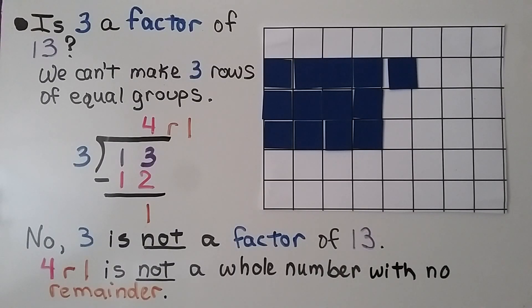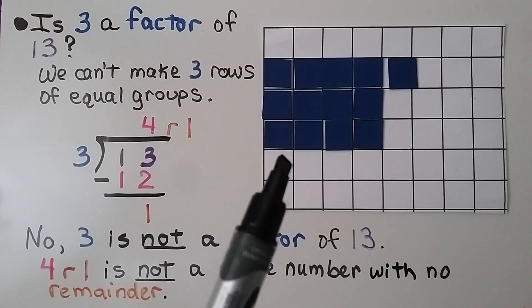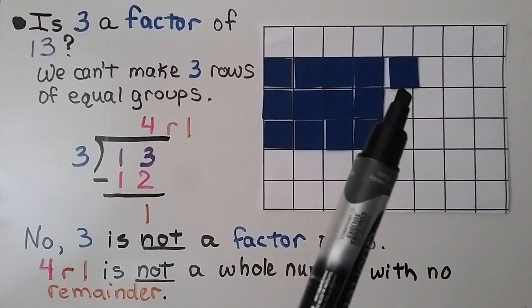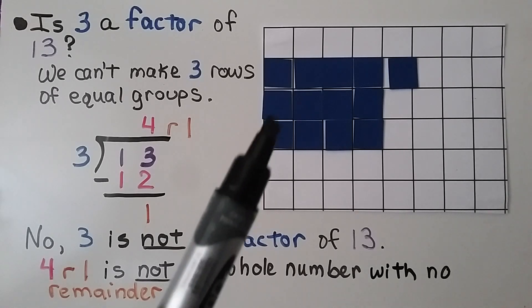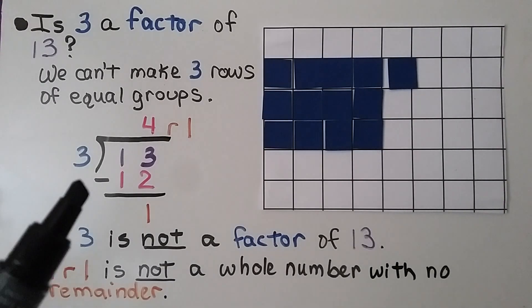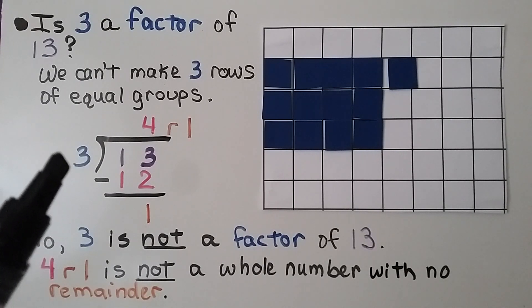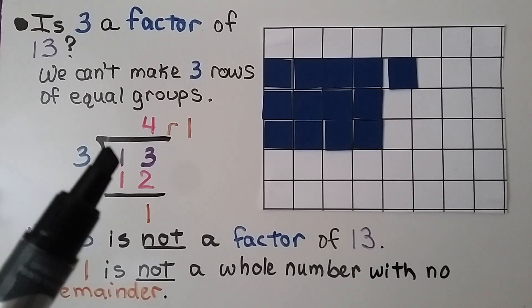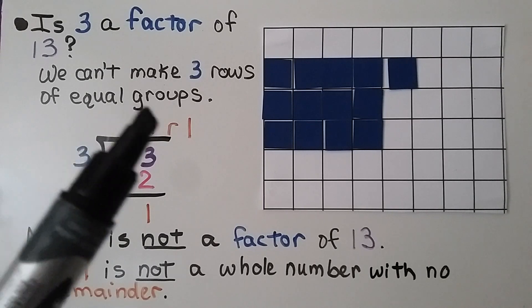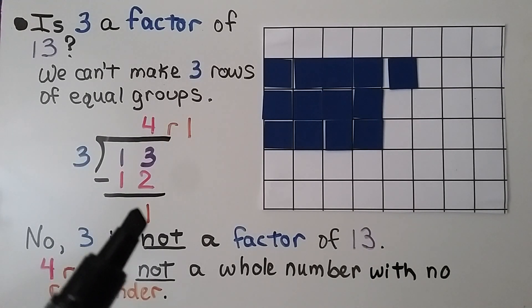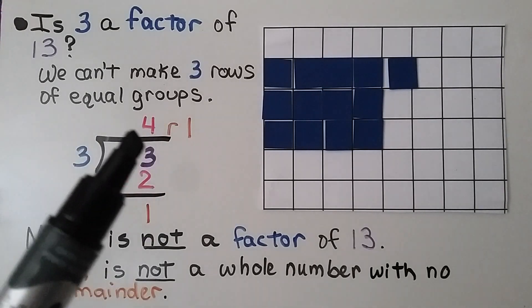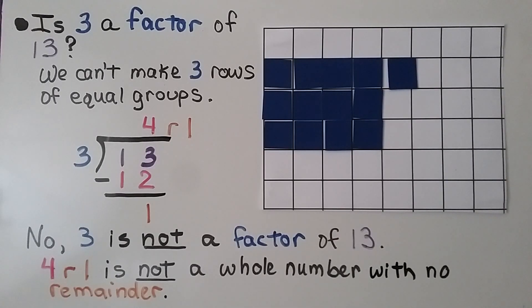Is 3 a factor of 13? Well, we can't make three rows of equal groups — we've got one left over. If we do 13 divided by 3, we ask how many times 3 can fit into 13. 3 times 4 is 12, and when we subtract we get 1 for a remainder — we have 4 remainder 1. So no, 3 is not a factor of 13, because 4 remainder 1 is not a whole number with no remainder.